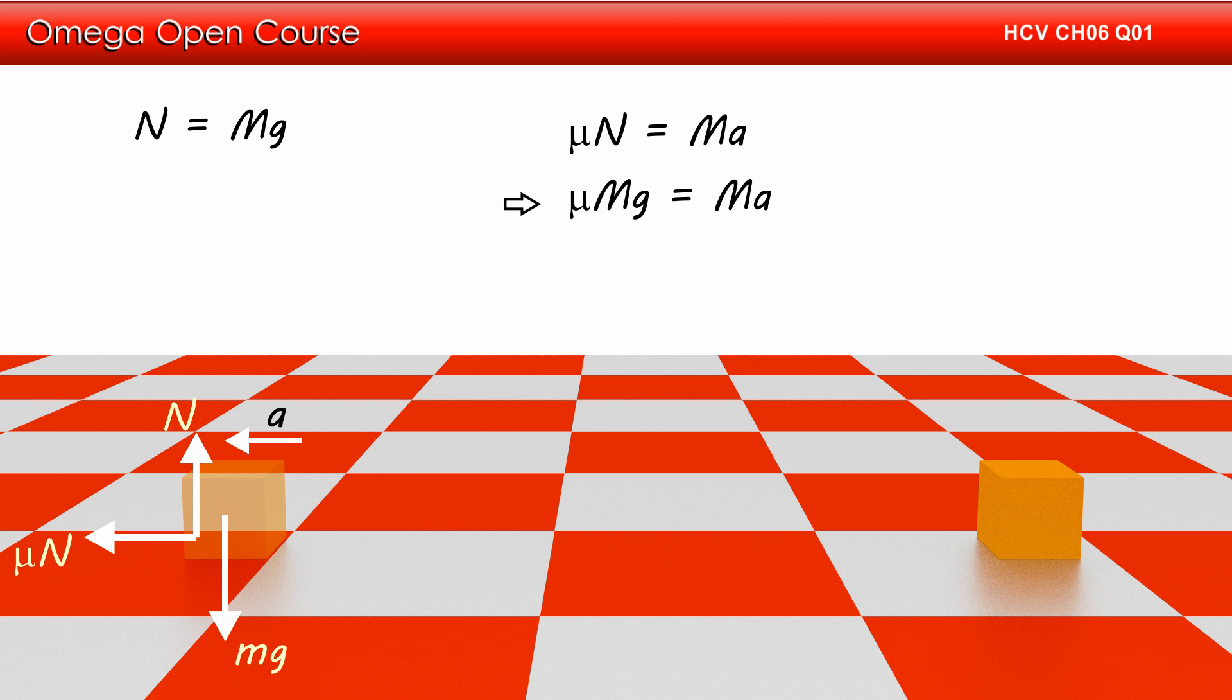Putting the value of normal, we get μmg equals ma, or μg equals a, which implies μ equals a by g. Putting the value of a as 4 m per second square and acceleration due to gravity as 10 m per second square,